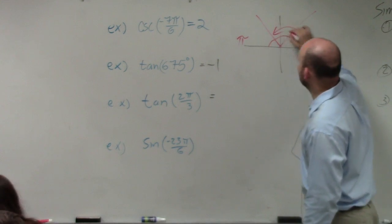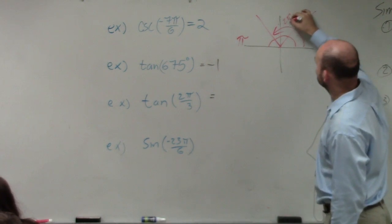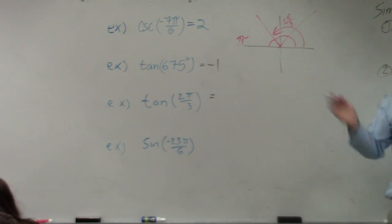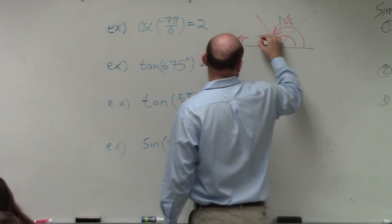So again, here is 2π over 3, correct? To get all the way around would be π over 3.